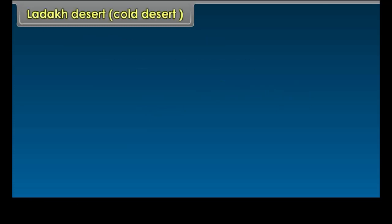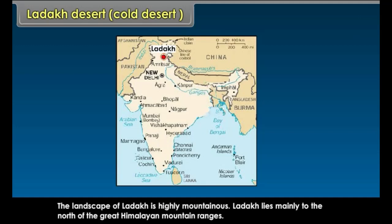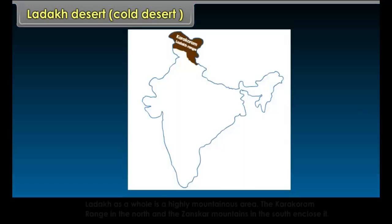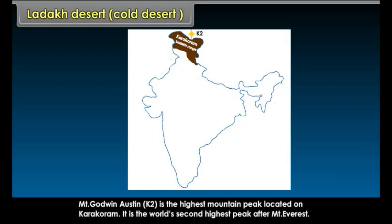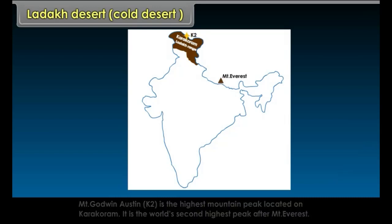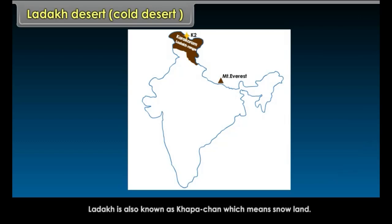Ladakh Desert — Cold Desert: Ladakh is located in the northernmost state of India. It is the eastern part of Jammu and Kashmir. The landscape of Ladakh is highly mountainous. Ladakh lies mainly to the north of the great Himalayan mountain ranges. The Karakoram range in the north and the Dzanskar mountains in the south enclose it. Mount Godwin-Austin K2, the world's second highest peak after Mount Everest, is located on the Karakoram. The Ladakh range has an average height of 6000 meters above mean sea level. Ladakh is also known as Kapa-chan, which means snow land.